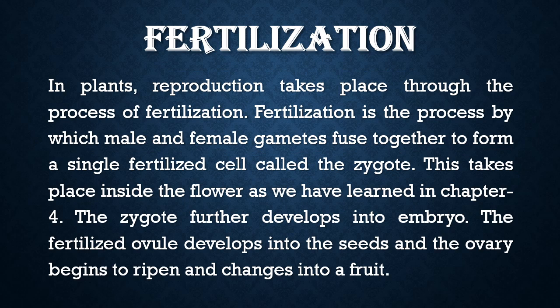In plants, reproduction takes place through the process of fertilization. Fertilization is the process by which male and female gametes fuse together to form a single fertilized cell called a zygote. This takes place inside the flower, as we have learned in Chapter 4. The zygote further develops into an embryo.